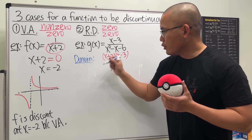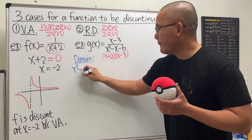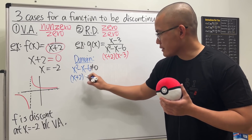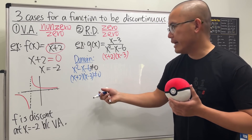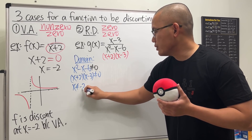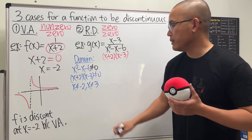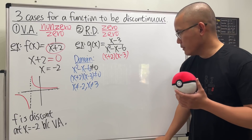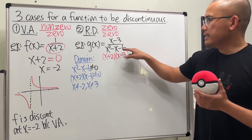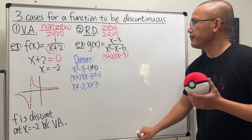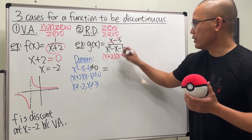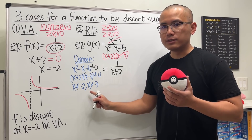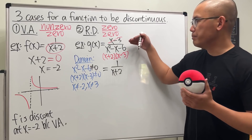Based on the original, we set x squared minus x minus six not equal to zero, which factors as x plus two times x minus three not equal to zero. This means x cannot be negative two and x cannot be positive three. So yes, we can cancel to get one over x plus two, but we must keep in mind that x cannot equal three based on the original expression.